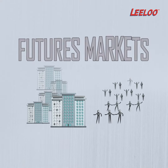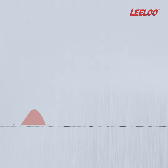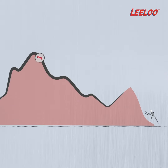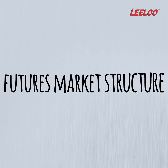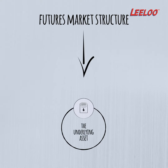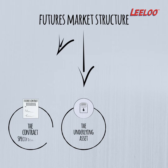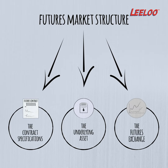A futures contract is underpinned by three crucial components: the underlying asset, the contract specifications, and the futures exchange where it's traded.